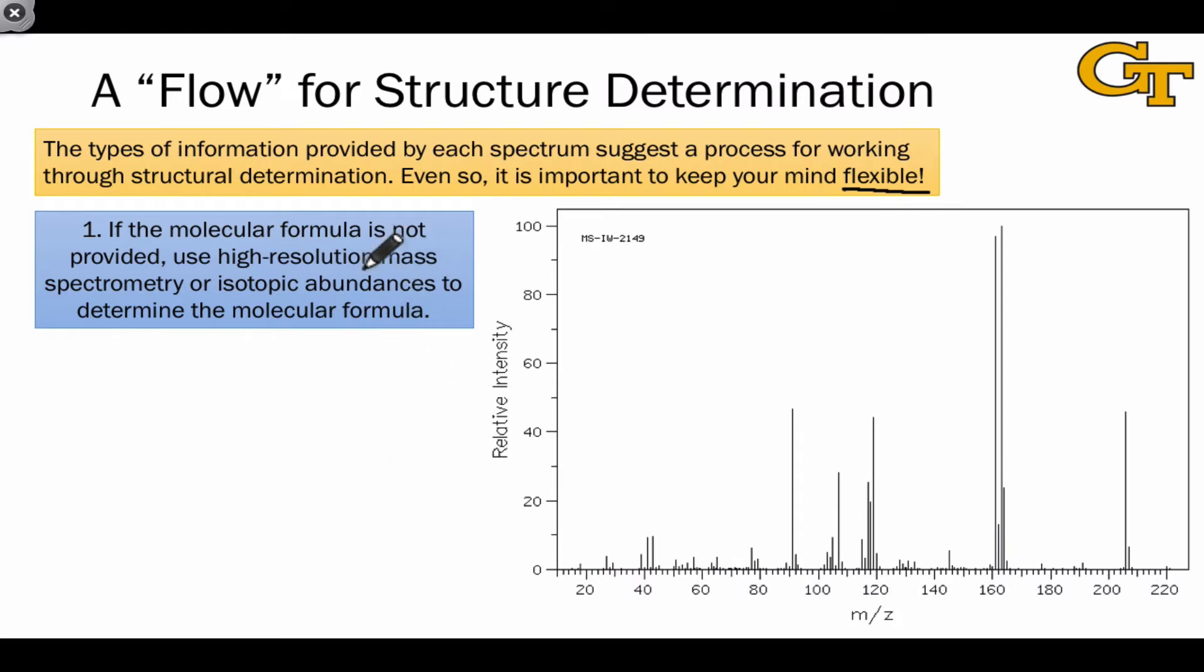If the molecular formula is not provided, use high-resolution mass spectrometry. The idea is that the method is sensitive enough that we can tell the difference between atoms or groups with the same mass in a coarse sense. For example, CH2, which has a mass of 12, is the same as the mass of a nitrogen atom. But high-resolution mass spectrometry can distinguish these. Isotopic abundances can also be useful for determining the number of chlorine or bromine atoms in the formula.